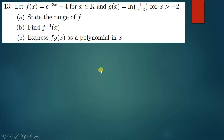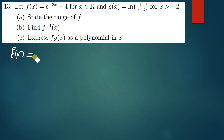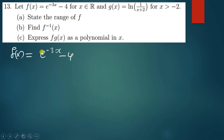All right, let's quickly solve the question. The first question is asking us to state the range of f. So f of x has been given to be e to the power negative 3x minus 4. The range of this function is found in a straightforward way.